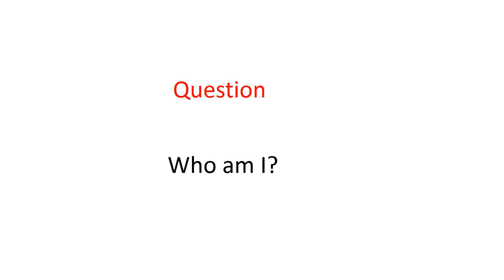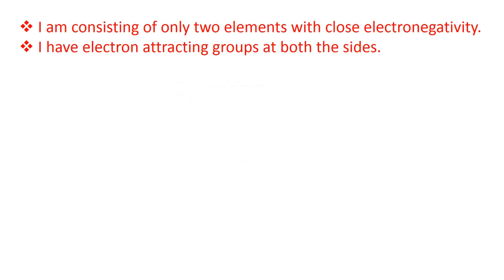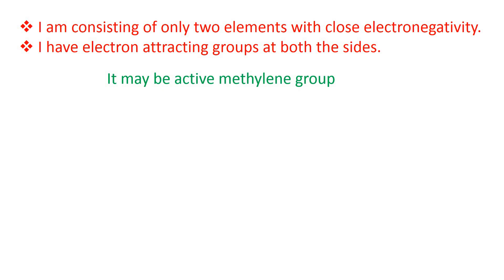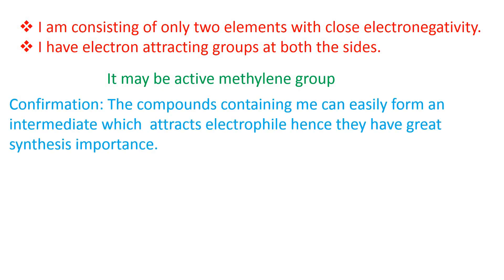Now let's solve the riddle and get the answer. The clues given in the riddle are: first, I am consisting of only two elements with close electronegativity. Second, I have electron attracting groups at both sides. From these clues, we can guess that the answer is active methylene group. Compounds containing me can easily form an intermediate which attracts electrophile, hence they have great synthesis importance.